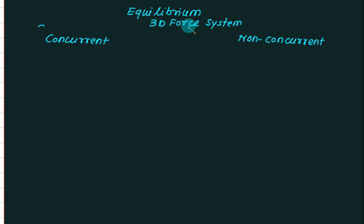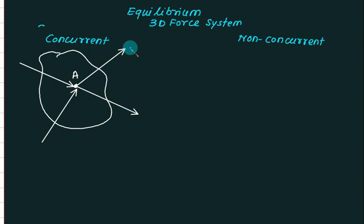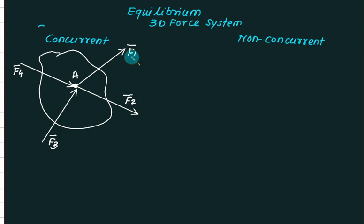We discuss the conditions for equilibrium for a 3D force system. We divide our discussion in two parts: one is concurrent and one is non-concurrent. For concurrent forces, F1, F2, F3 pass through a single point, so this system can be replaced by a single resultant R bar. R bar equals F1 bar plus F2 bar plus F3 bar plus F4 bar.